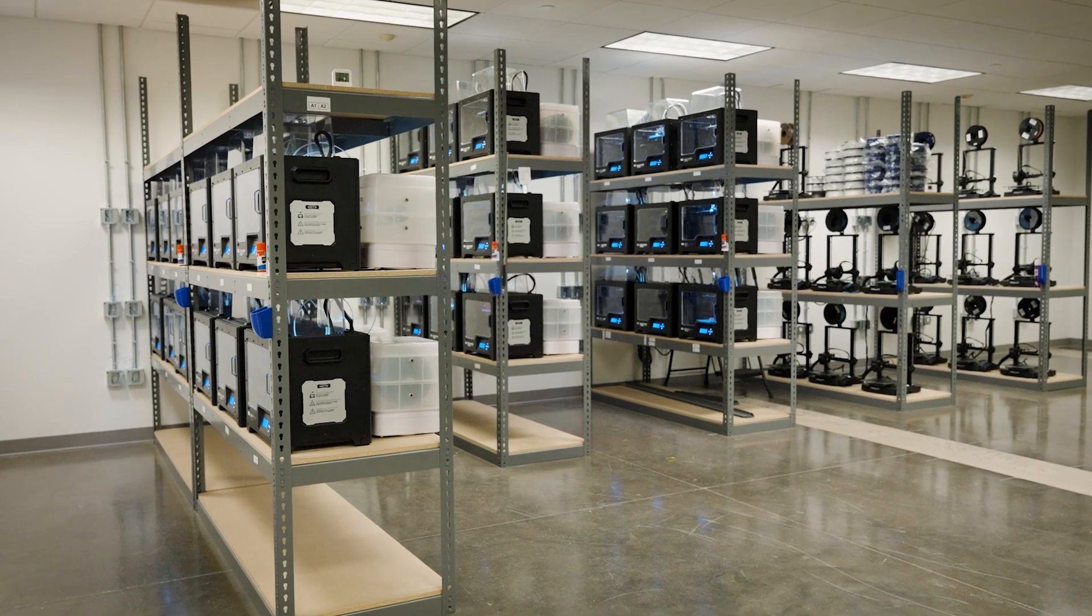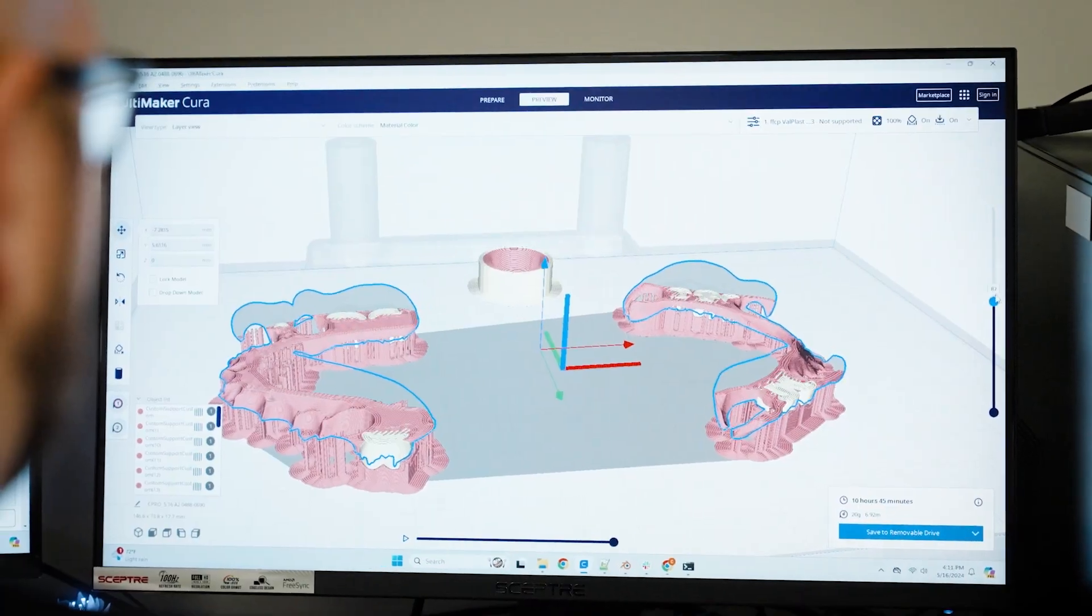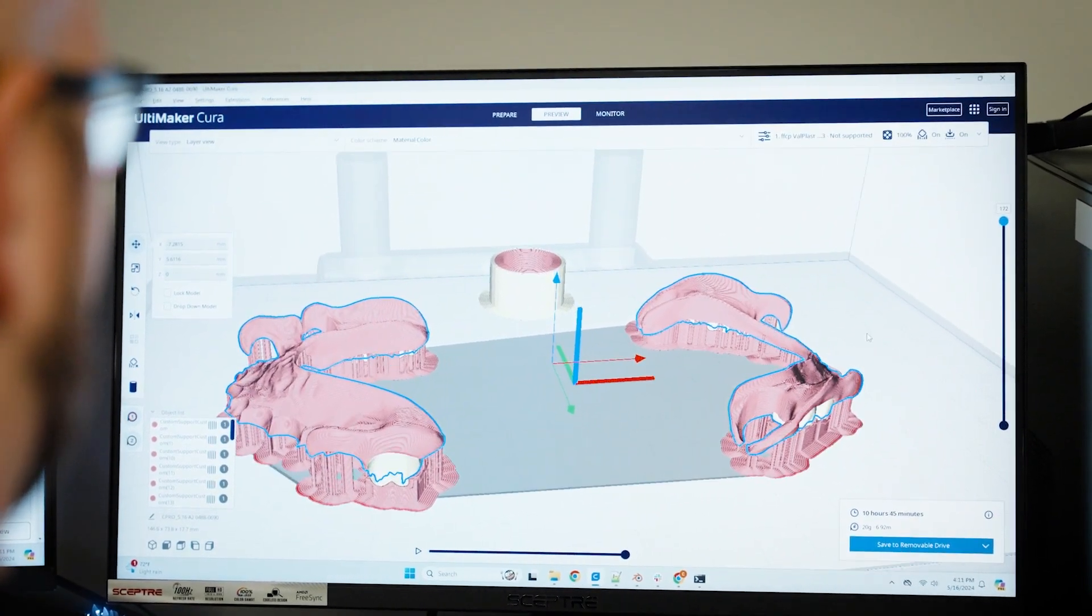Impress 3D operates the world's first and only 3D printing center for Valplast flexible partials.